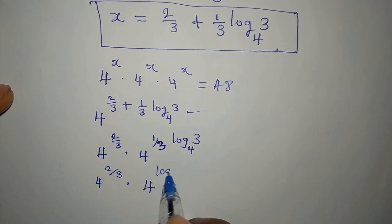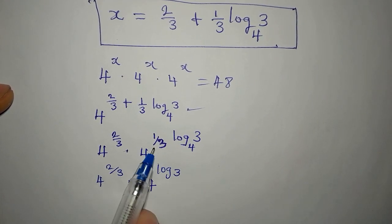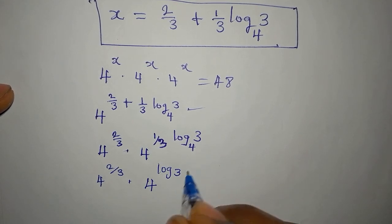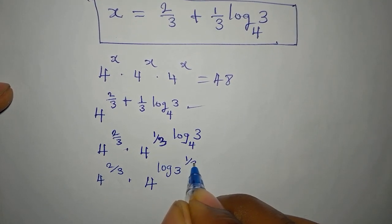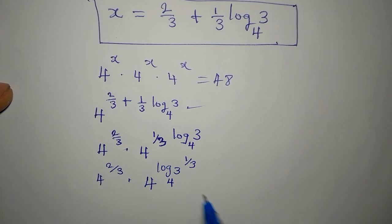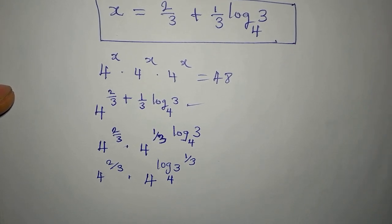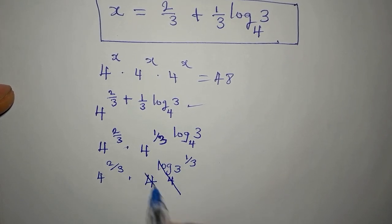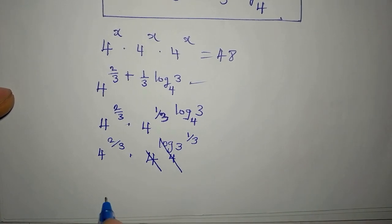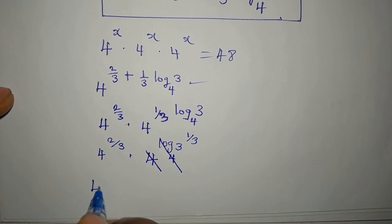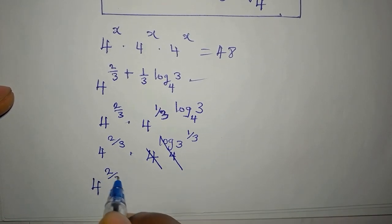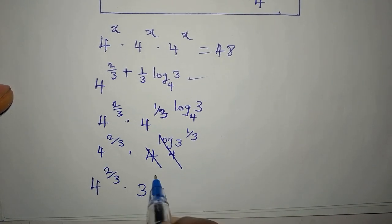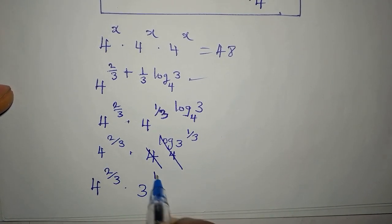We have 4 to the power of 2/3 multiplied by 4 to the power of log₄(3^(1/3)). The 1/3 is the power of 3, and then log to base 4 cancels with the base 4, leaving us with 4 to the power of 2/3 multiplied by 3 to the power of 1/3.